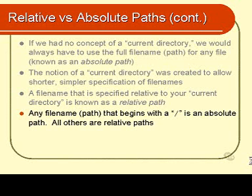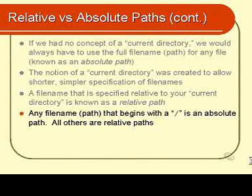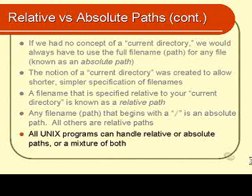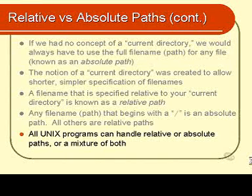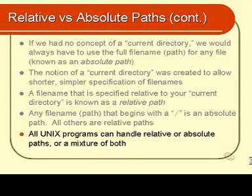The way to tell the difference between a relative path and an absolute path is quite simple. If the path begins with a forward slash — if the very first character is a forward slash — then it is an absolute path. Otherwise, it's a relative path. Any Unix program can handle relative paths or absolute paths, or even a mixture of both in the same program if you need to. And that's about all there is to it — that's relative and absolute paths.